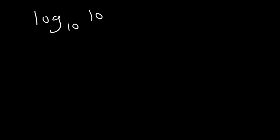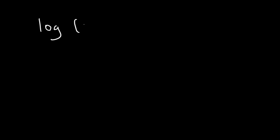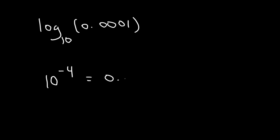Now what about log base 10 of 100? 10 times 10 is 100, so you need to multiply two 10s to get to 100 — so it's 2. Now what about log of 0.0001? The base is 10. It turns out that 10 to the negative 4 is 0.0001, so this is equal to negative 4.